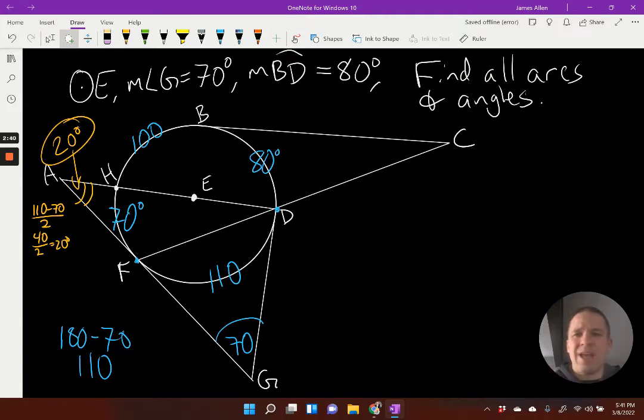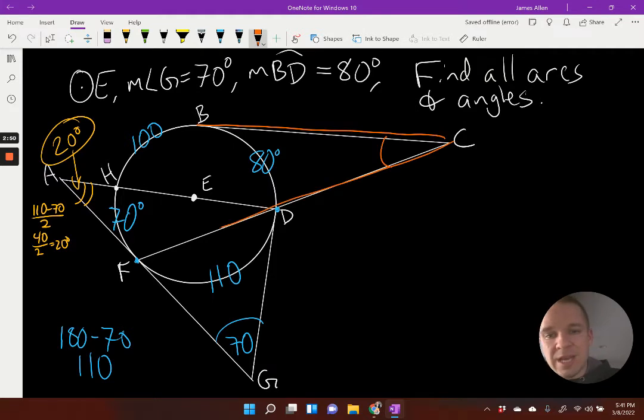How about angle C? Angle C over here. I'll switch to orange now. For angle C, that is also an out angle. Its intercepted arcs hit at that point of tangency. And then the secant line goes to D and F. So I would take my larger arc, which is the 100 and the 70. So 170 right here. And I'm going to subtract the 80 degrees and divide by two.